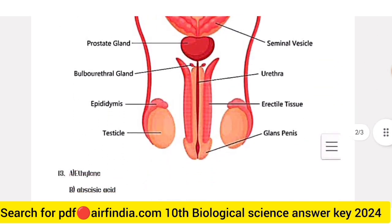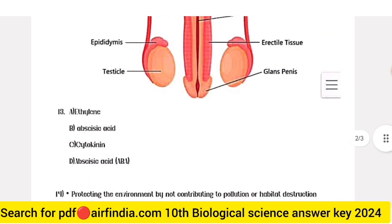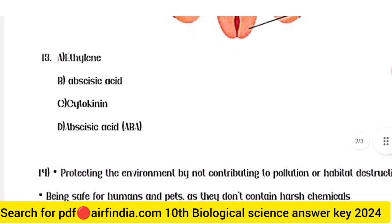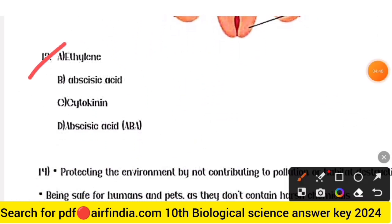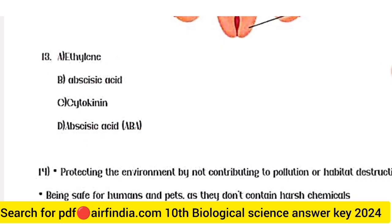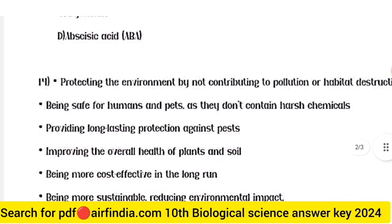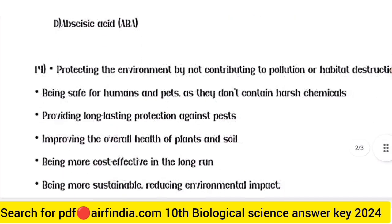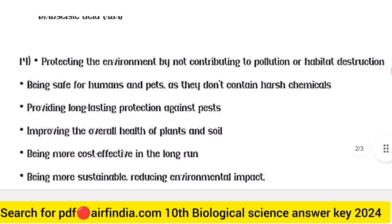Question thirteen: the answers are — a is ethylene, b is abscisic acid (ABA), c is cytokinin, and d is abscisic acid (ABA). This is the full answer for question thirteen.